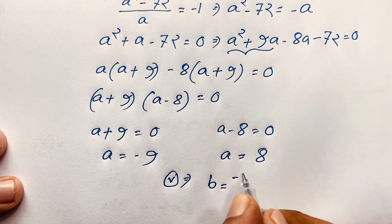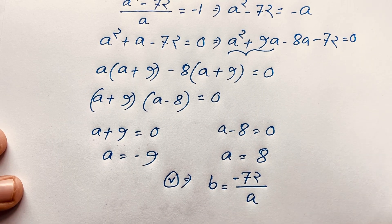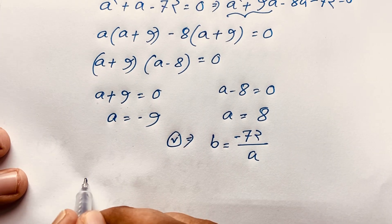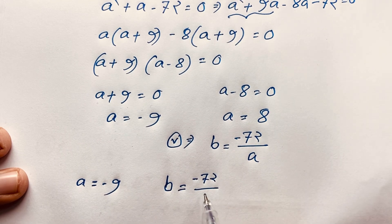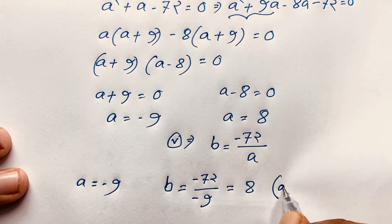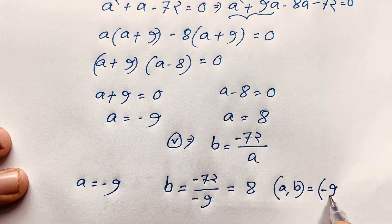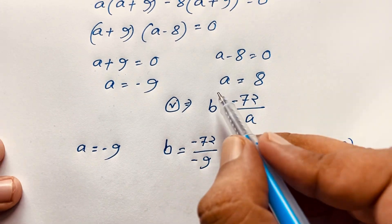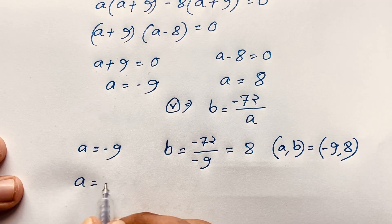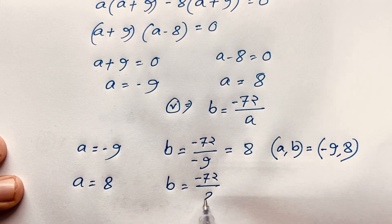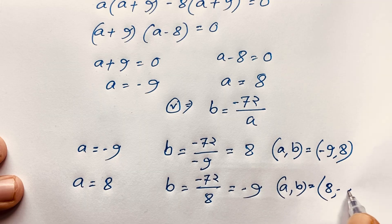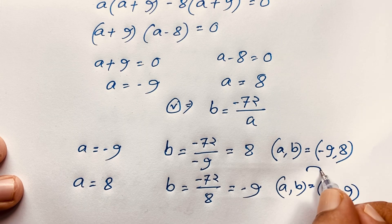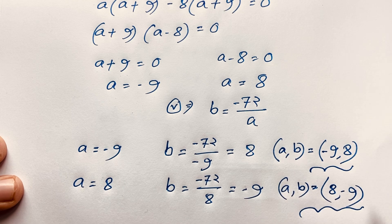Using our fifth equation b equals negative 72 over a: when a equals negative nine, b equals negative 72 divided by negative nine equals eight. So the answer is (a, b) equals (negative nine, eight). When a equals eight, b equals negative 72 divided by eight equals negative nine. So the final answer is (a, b) equals (eight, negative nine). Thank you all — if you enjoy this video, please subscribe for other interesting videos. Goodbye, take care!